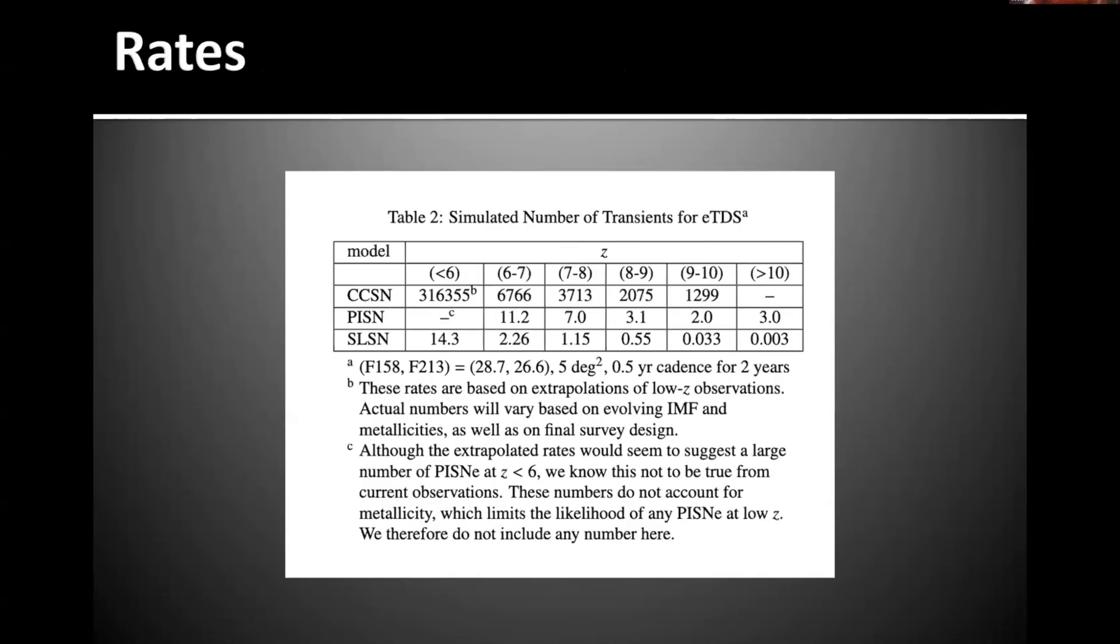Here are what the rates look like. These come from Takashi simulations. We designed the survey to be able to detect a handful of superluminous events. You can see we're at about the dozen level, just a couple past redshift of six. That buys you a few more pair instability events, which is pretty nice. So that gives you a nice sample right off the bat. And then core collapse, you could just get blown out of the water. You're talking tens of thousands out at the epoch of reionization. It's just really exciting.